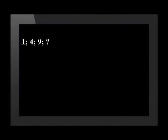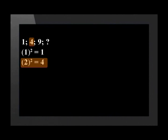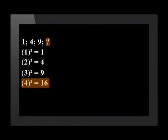Look at the sequence 1, 4, 9. Let's figure out what the next number will be. This number pattern is a sequence of squared numbers. Term 1 is 1 squared, which is 1. Term 2 is 2 squared, which is 4. Term 3 is 3 squared, which is 9. So the fourth term will be 4 squared, which is 16. Each time we squared n to give us the next number in the pattern. This is an example of a quadratic sequence with Tn equal to n squared.